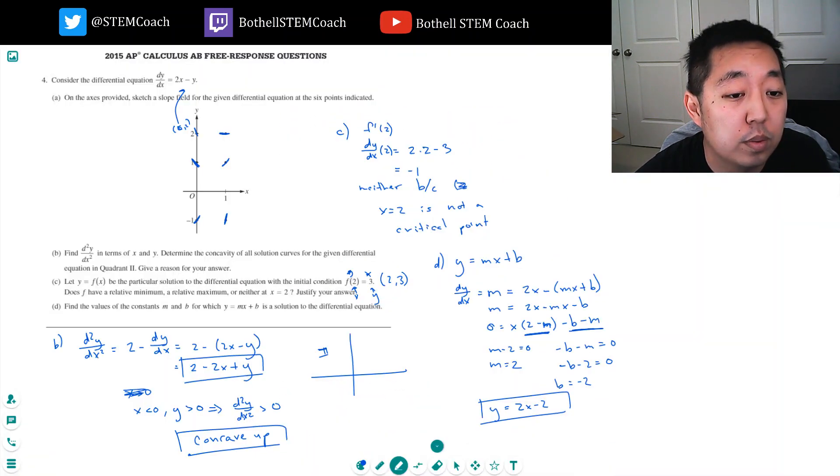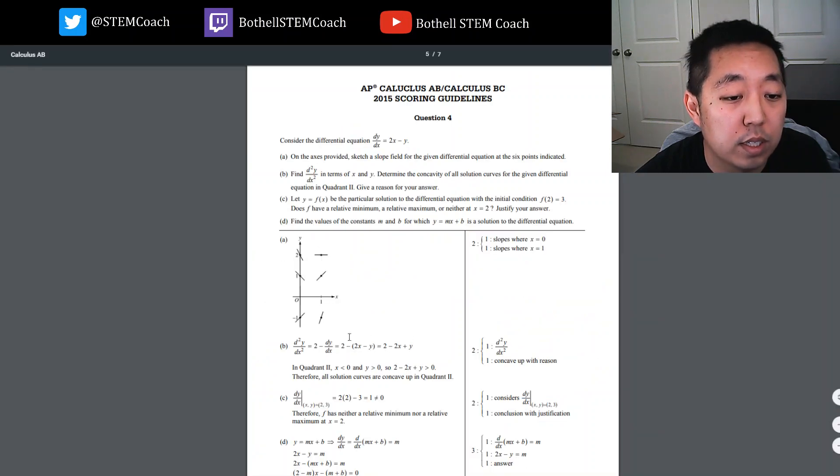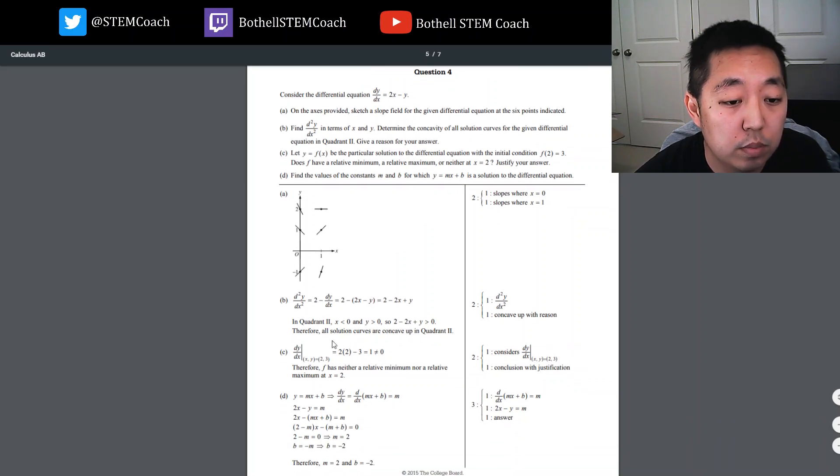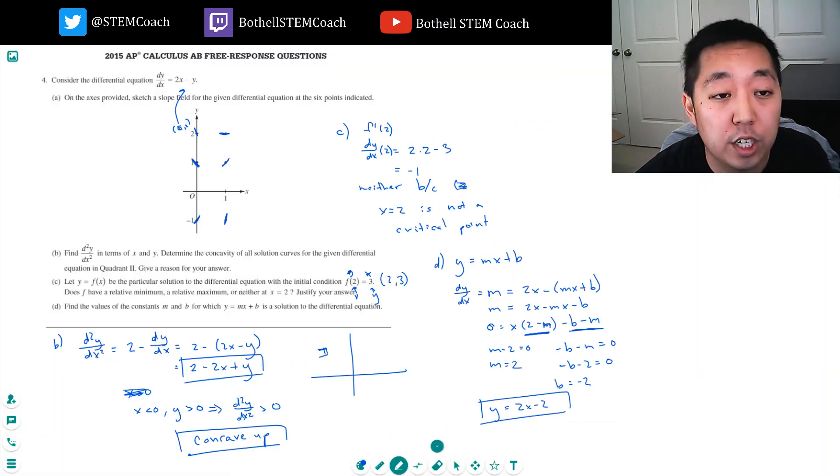Down, down, up. Then, flat, up. Then, steeper, up. Okay, so that's good. All solution curves are concave up. Yeah, it's greater than 0. dy/dx is not equal to 0. Therefore, nor relative maximum. Because it's not a critical point. The derivative is not 0 there. And m equals 2, b equals negative 2. Okay. So, it looks good.